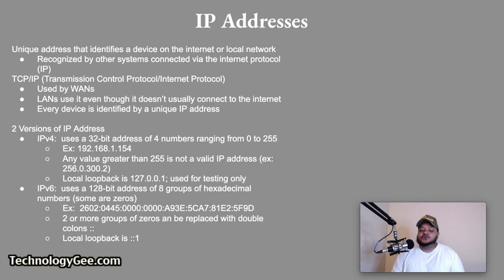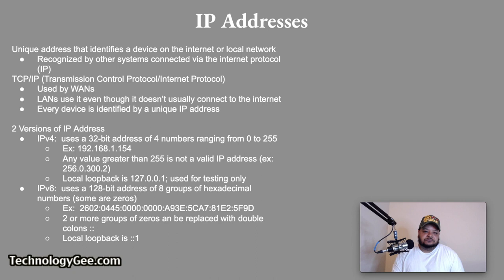IP version 6 uses a 128-bit address composed of eight groups of hexadecimal numbers, some of which can be zeros. If you have consecutive sets of zeros in an IPv6 address, you can shorten it by replacing them with double colons. The loopback address for an IPv6 address is double colon 1 (::1).